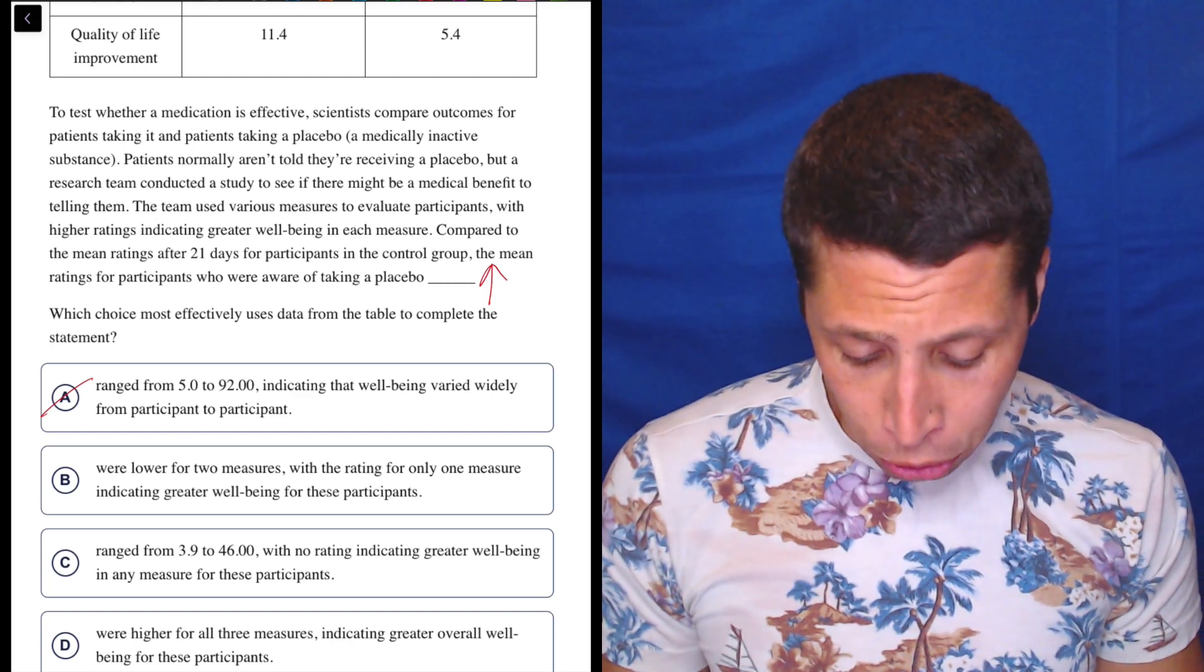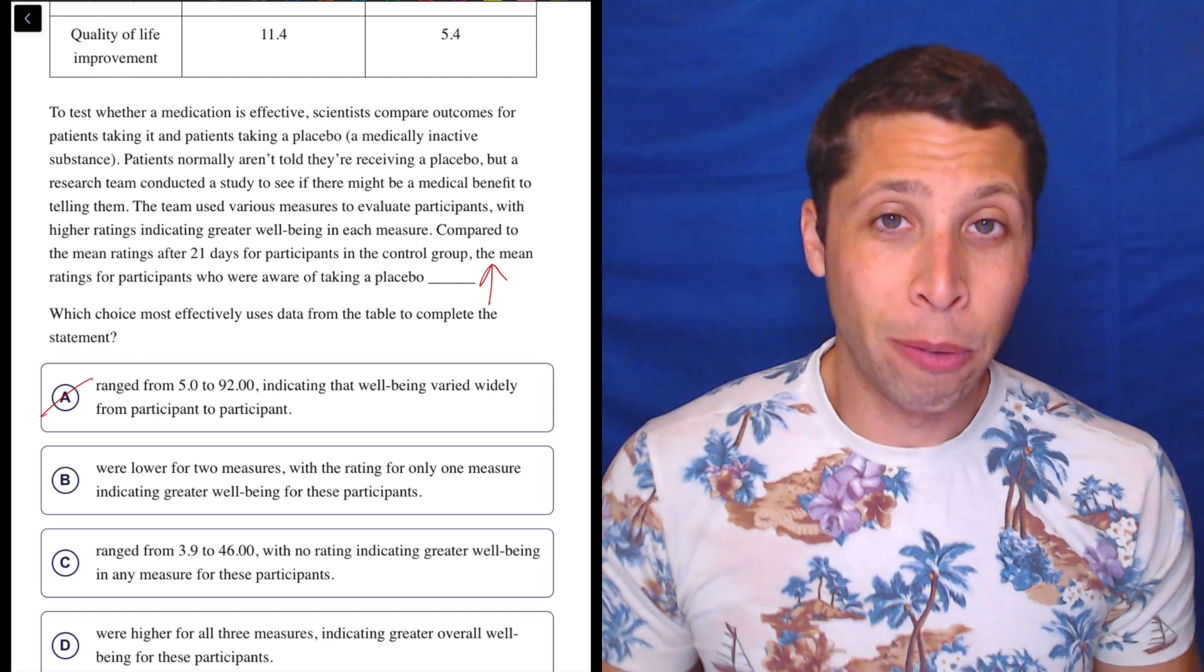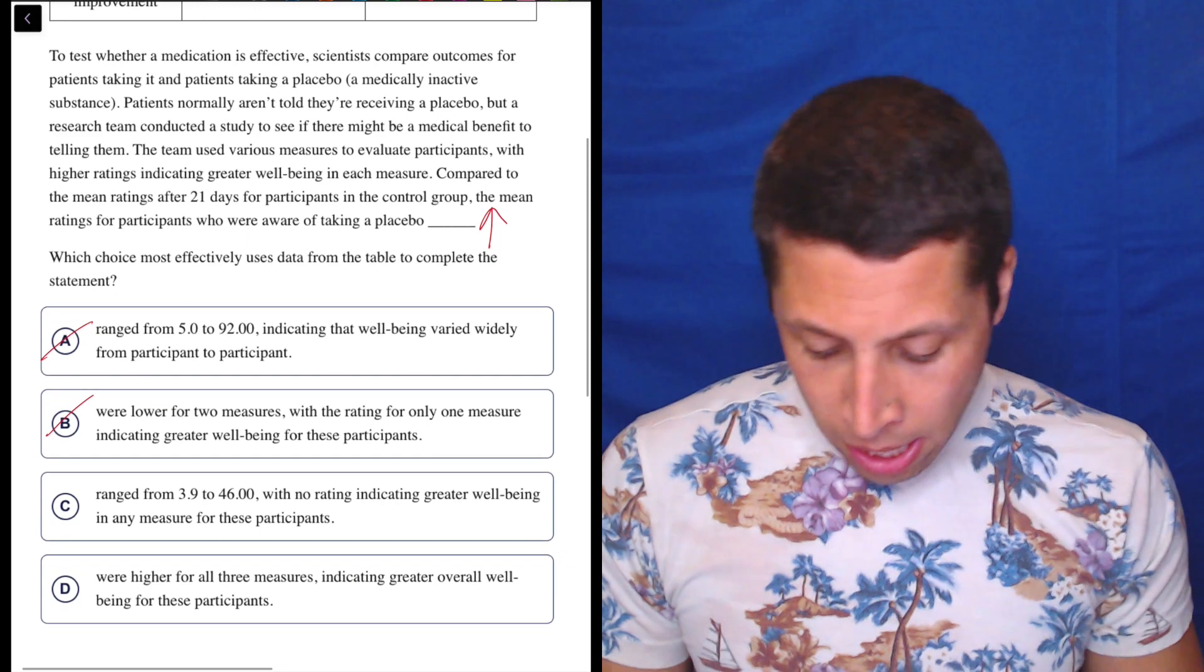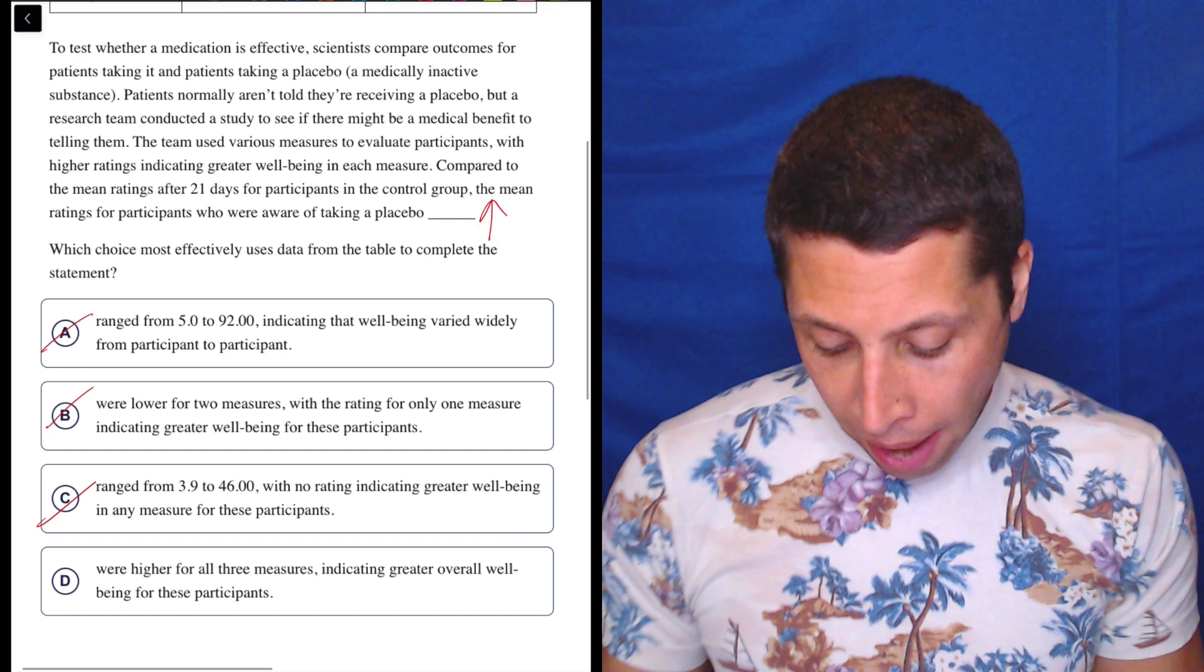B, we're lower for two measures with a rating for only one measure indicating greater well-being for these participants. No, we just said it's higher for all three measures. C, range from 3.9 to 46. Well, that's not even the right numbers. That's just the wrong column.